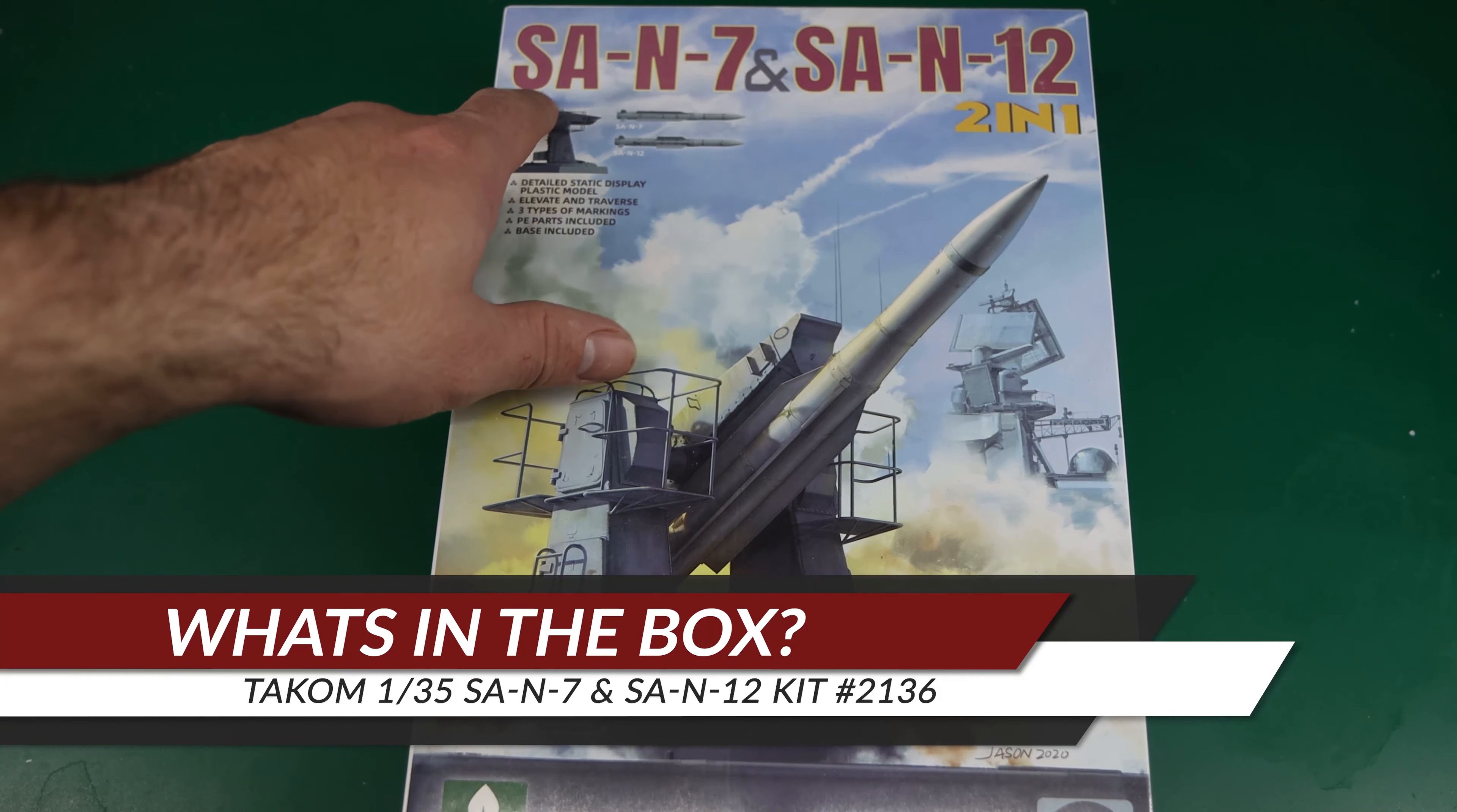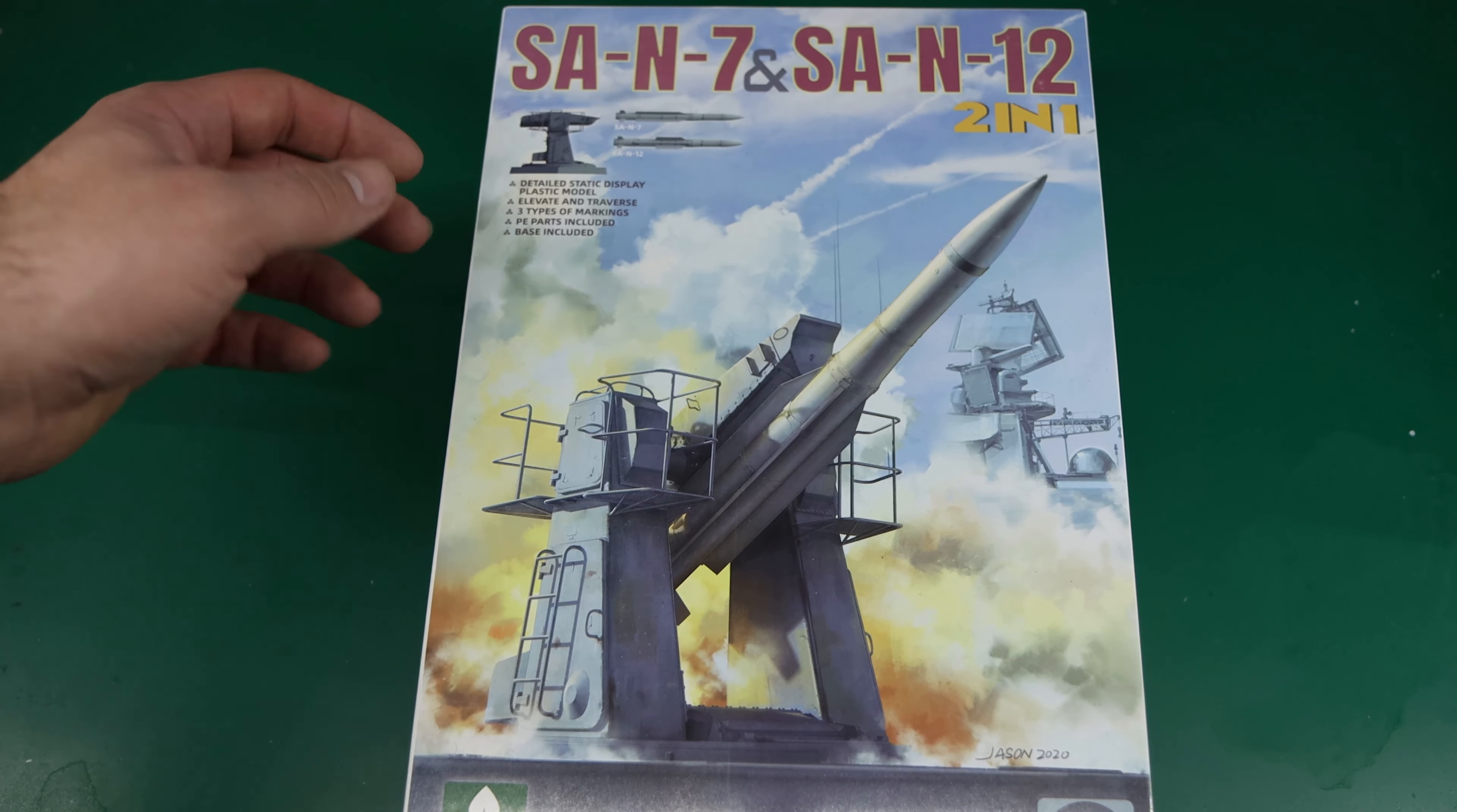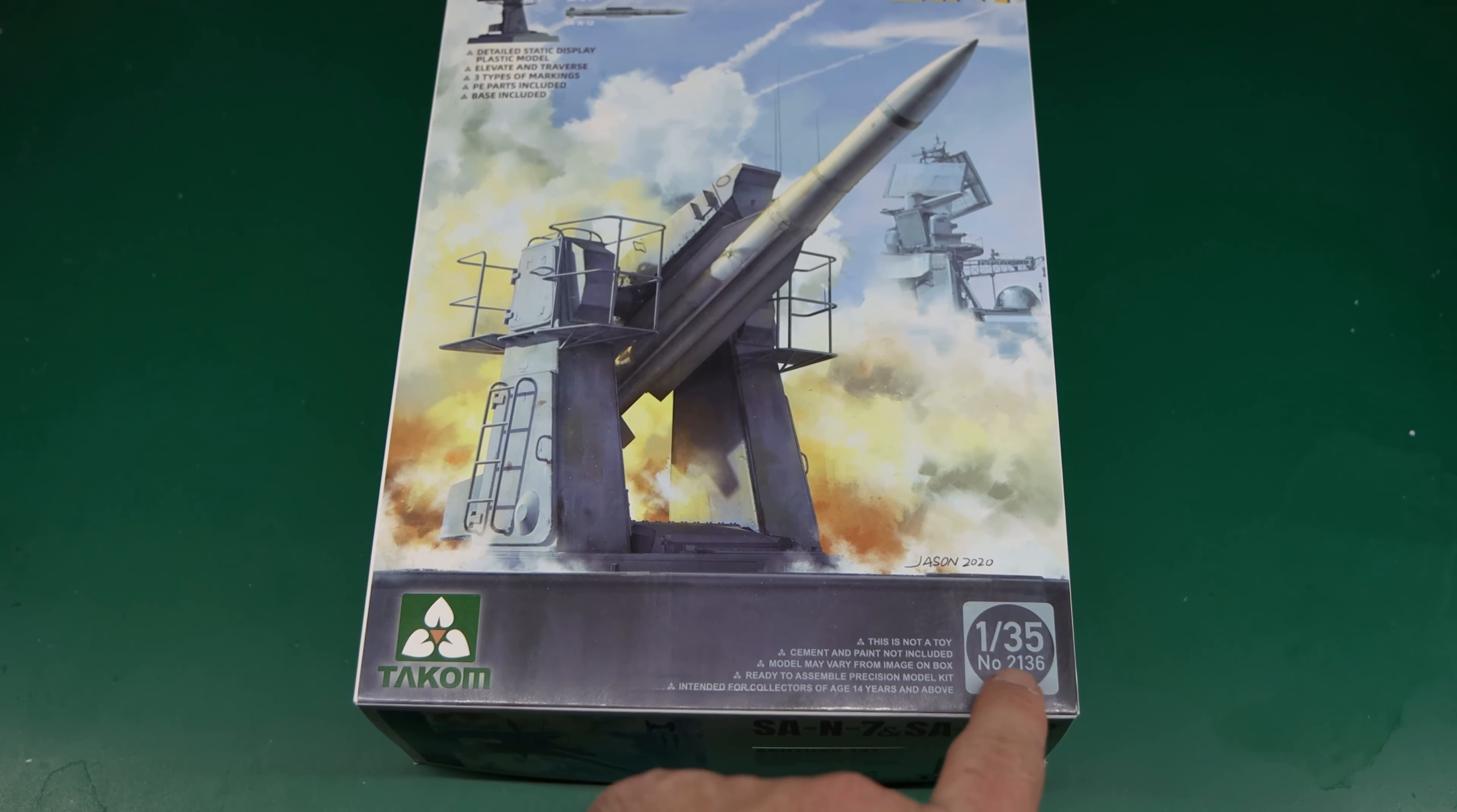Alright guys, so as you can see this is the SA-N7 and SA-N12, a two-in-one kit from TACOM. You have your choice of the missiles that you can build and then display. There are three types of markings. PE parts are included as well as a base. This is 1:35th scale, and it is kit number 2136.